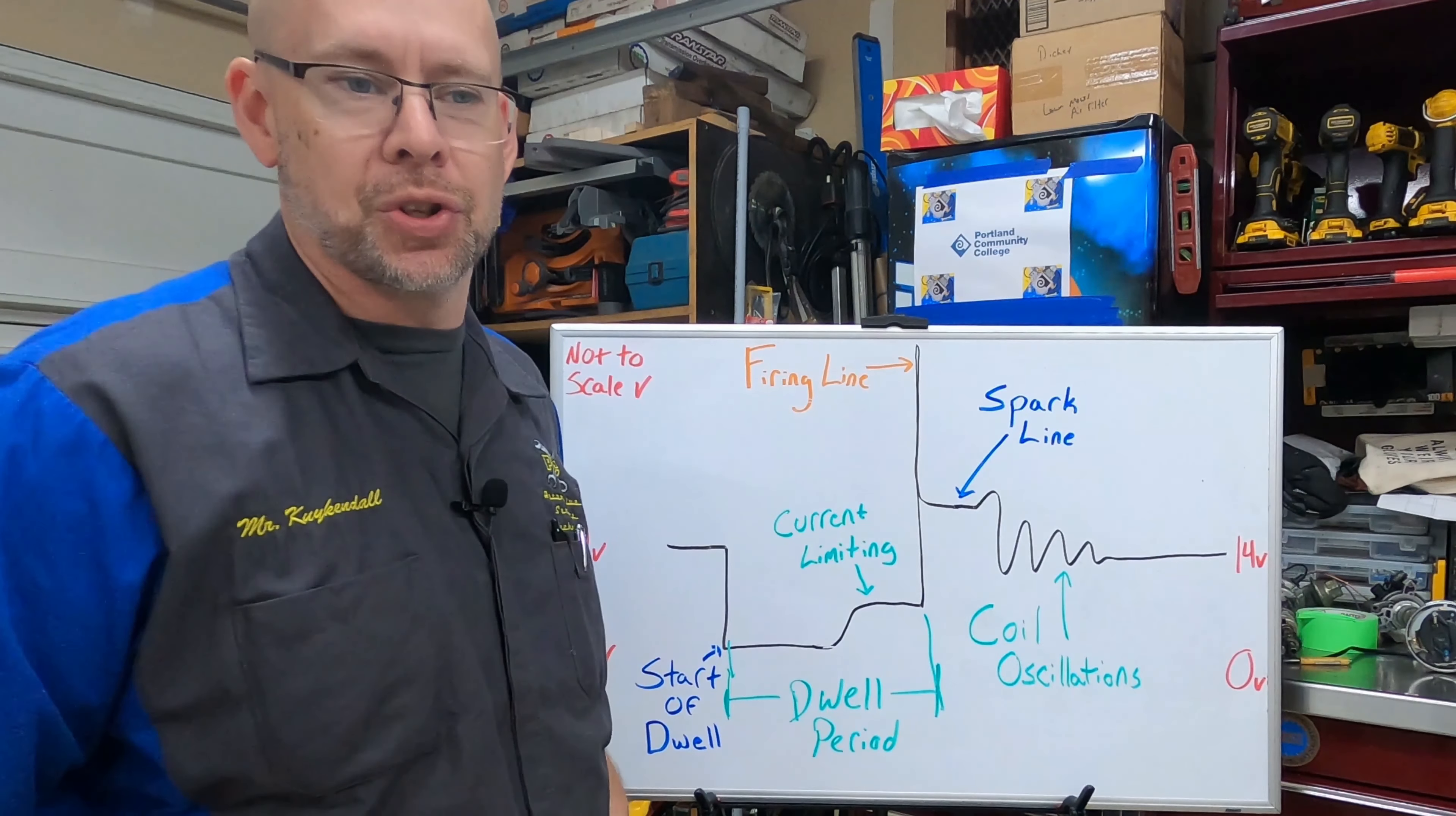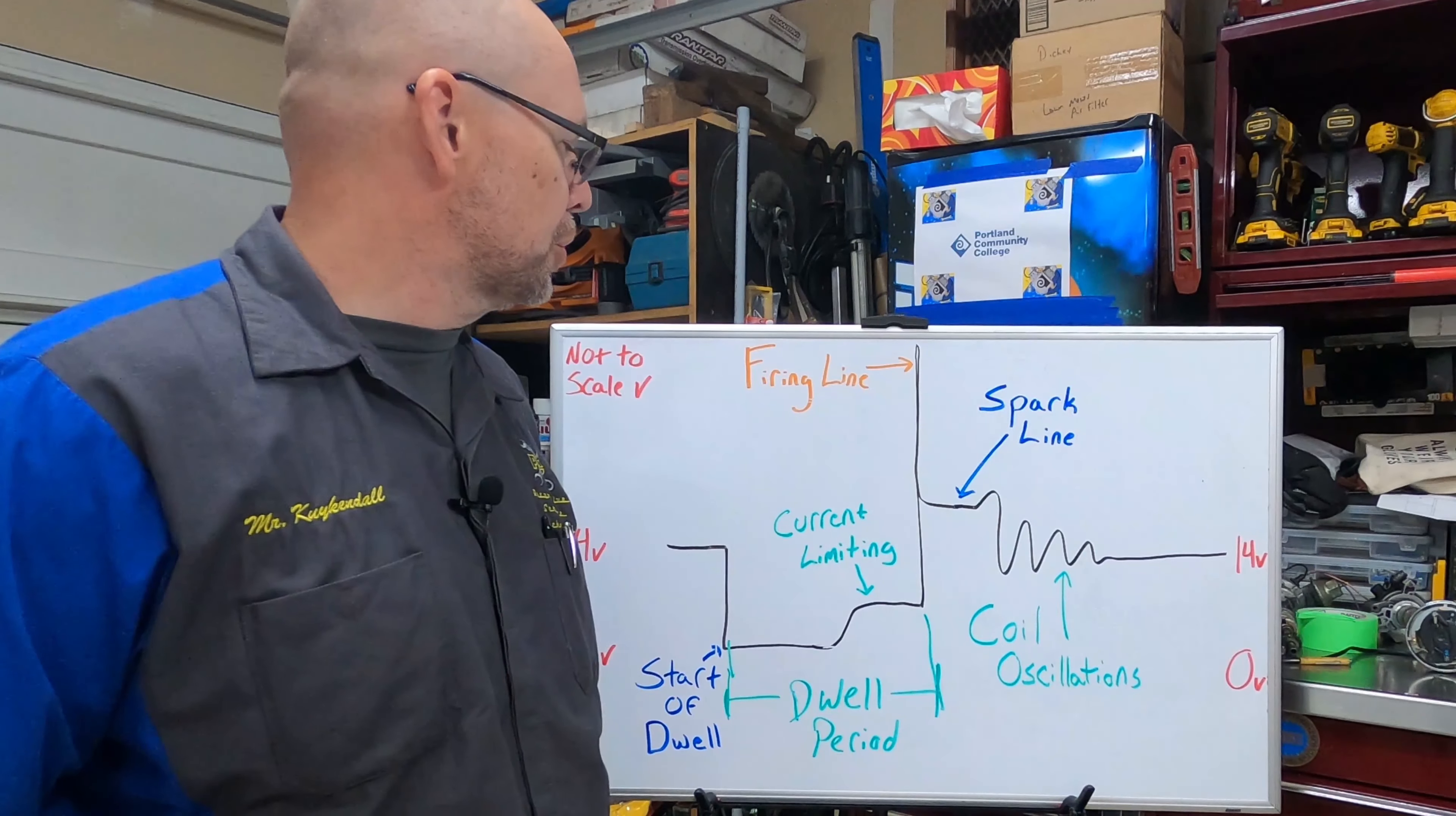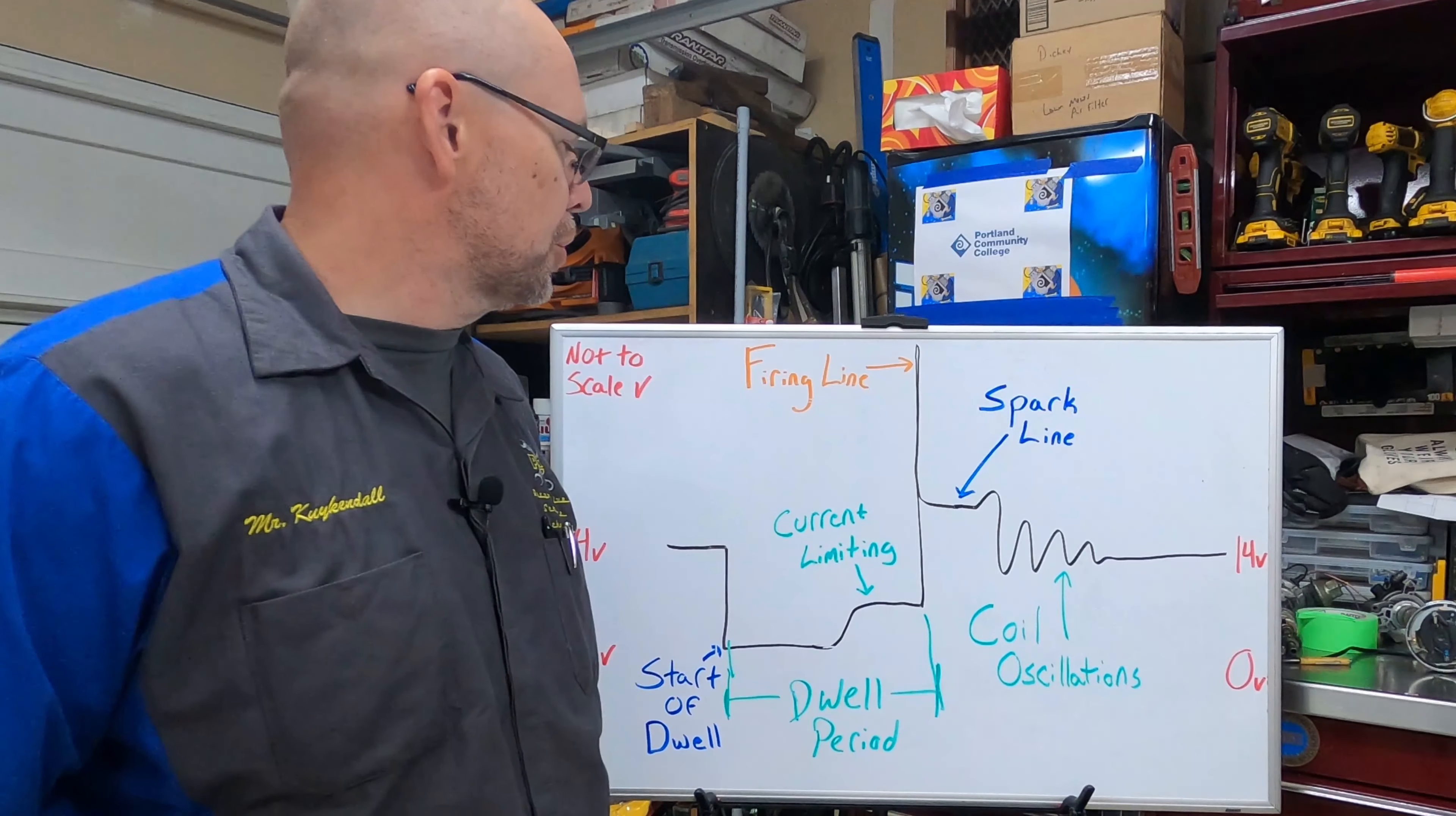So we pull that wire off, we get our maximum amount on our firing line, and then we get an idea for how much available voltage the coil has. So I hope that gives you a good idea about the basics of what's going on on our firing line. We'll catch you in the next video.